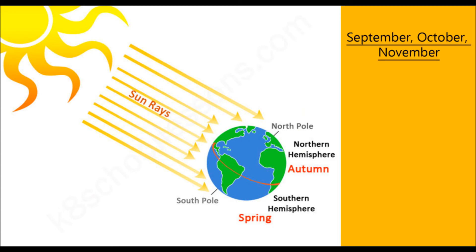Autumn is the third of the four seasons. In September, October, and November, Earth has moved so that the equator receives the most sunlight. Everywhere on Earth except for the North and South Poles, days and nights are of equal length. Autumn occurs in the Northern Hemisphere while spring begins in the Southern Hemisphere.